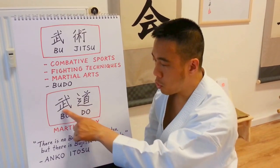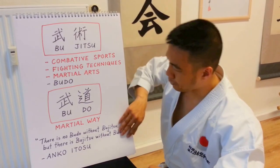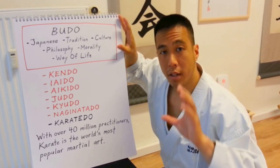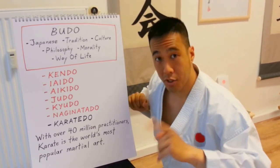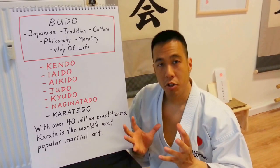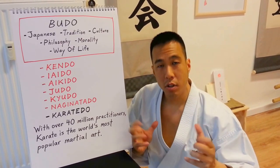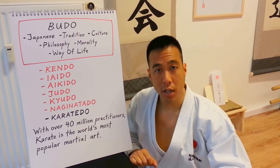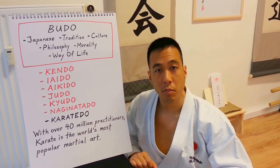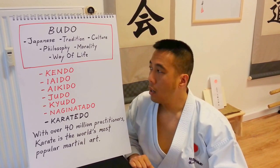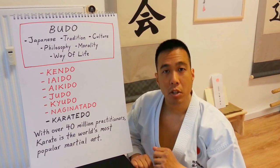Budo consists of two words: bu, the martial, and do, the way. Budo is one category of the martial arts. Within the martial arts, in English, this refers to all of the Asian fighting traditions. This could mean Viet Vo Dao from Vietnam, Kung Fu styles such as Shaolin Kung Fu and Wing Chun from China and Hong Kong, or Korean styles such as Tang Su Do, Hapkido, Taekwondo, and Gando. Budo refers specifically to traditional Japanese martial arts.